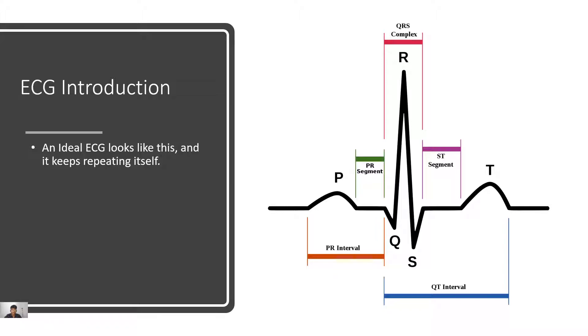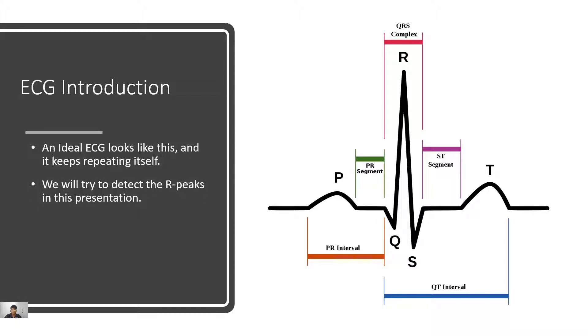An ideal ECG looks like this and it keeps repeating itself. We will try to detect R-peaks in this presentation — this is the R-peak in an ideal ECG signal.